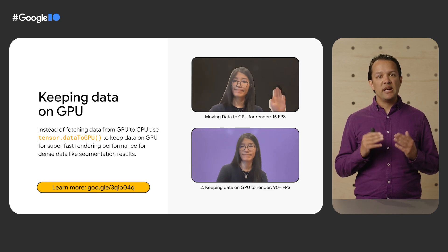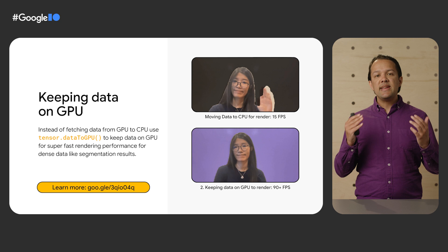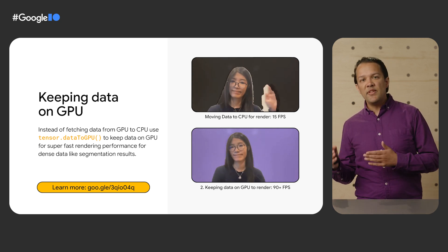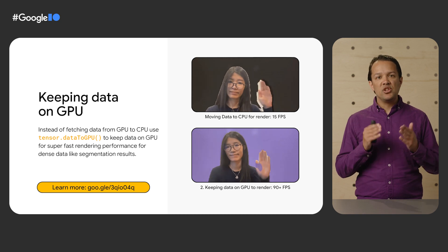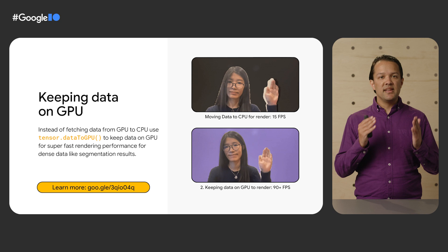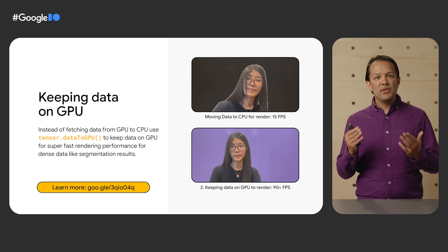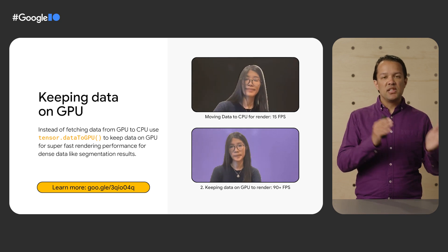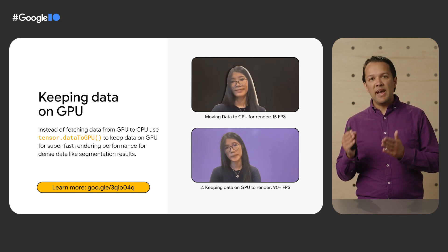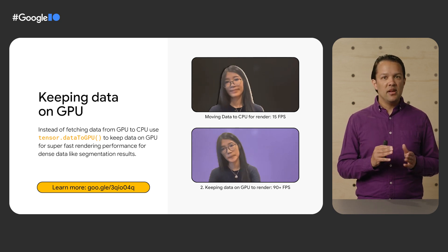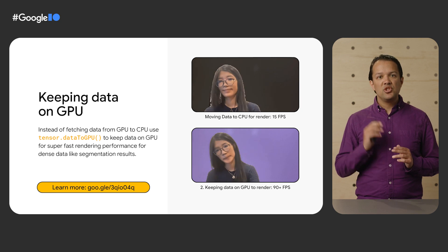We've also launched a new API function in our 3.13.0 release to extend the ways you can return data from a tensor to enable more efficient GPU-based pipelines. You can now simply call tensor.data2gpu to keep the data in the graphics card memory as a texture, enabling a huge performance boost if you're able to keep all your post-processing on the graphics card too, without needing to inspect the raw data in JavaScript on the CPU. This is particularly important when dealing with dense data coming back from, for example, segmentation models where pixel-level data is returned. In the demo shown, syncing segmentation data to the CPU results in 15 frames per second, but if you keep the data on the GPU with this new function and render that texture directly to Canvas 3D, you can get over 90 frames per second instead.